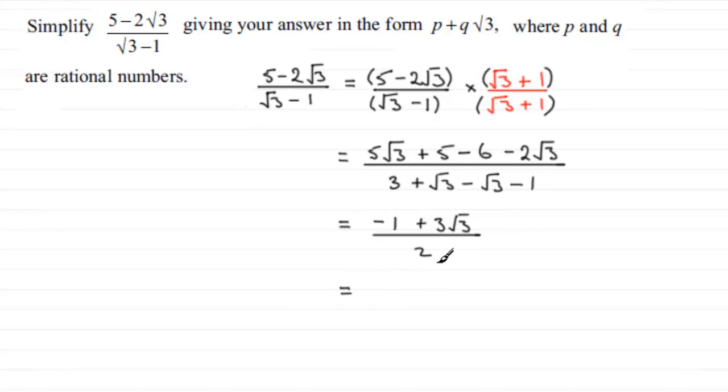And finally, if we divide each of these two terms now by 2, we get minus 1 half. And then we have plus 3 over 2 root 3. And you can see that this is expressed now in this form, p plus q root 3.